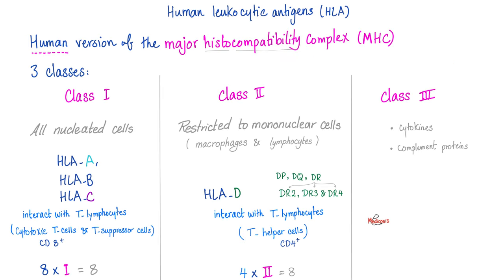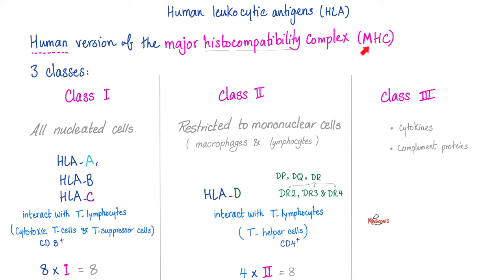Major histocompatibility complex — why call it major? Because there's another group called minor, so this is the main one. Why complex? Because it's made of many proteins. Histocompatibility — it has to be compatible with your own tissue. Since many organisms have MHC, we specify the human version with a unique name: the human leukocytic antigen, or HLA. So HLA are MHC in humans.